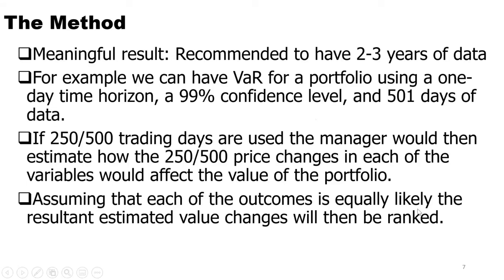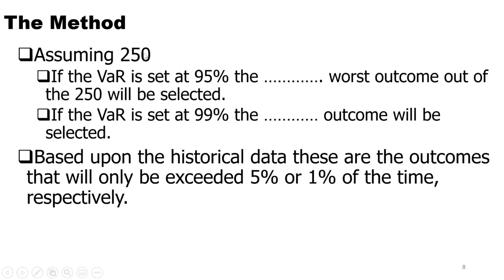The simulated returns can be ranked, and this ranking allows you to see exactly what scenario may have caused the risk at a given confidence interval. For example, assuming 250 trading days at a 95% confidence interval, we are looking for the worst outcome: 250 × 5% = 12.5, so we take either the 12th or 13th worst outcome.